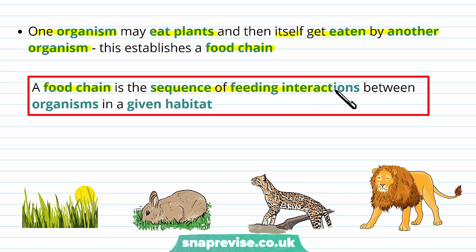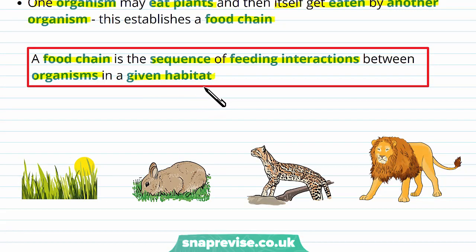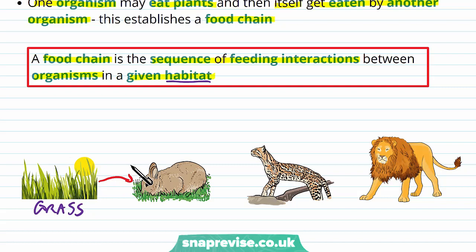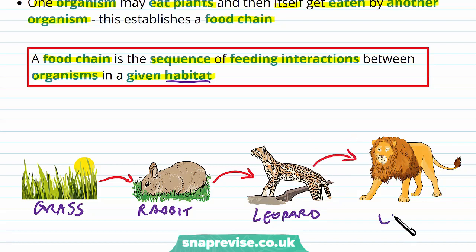A food chain is the sequence of feeding interactions between organisms in a given habitat, so it only refers to that habitat that they live in. For example, at the beginning we have grass, and the arrow going from grass to the rabbit shows that the rabbit can eat the grass. The rabbit may get eaten by a leopard, and the leopard itself may be hunted by a lion. What the arrow is pointing to is where that food will end up going to.